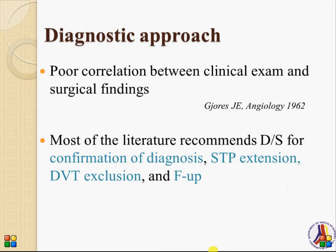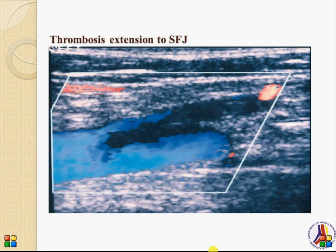Regarding the diagnostic approach, most publications recommend duplex scanning to confirm the diagnosis, to define the extension of thrombus in the superficial system, to exclude deep vein involvement — which is the most important — and for follow-up purposes. Here you can see a thrombus extending from the great saphenous vein through the saphenofemoral junction to the common femoral vein.